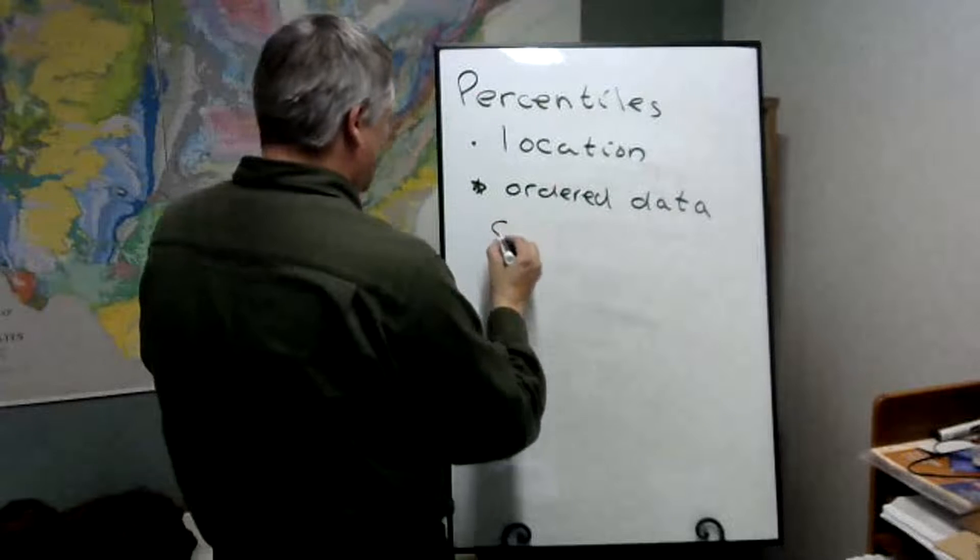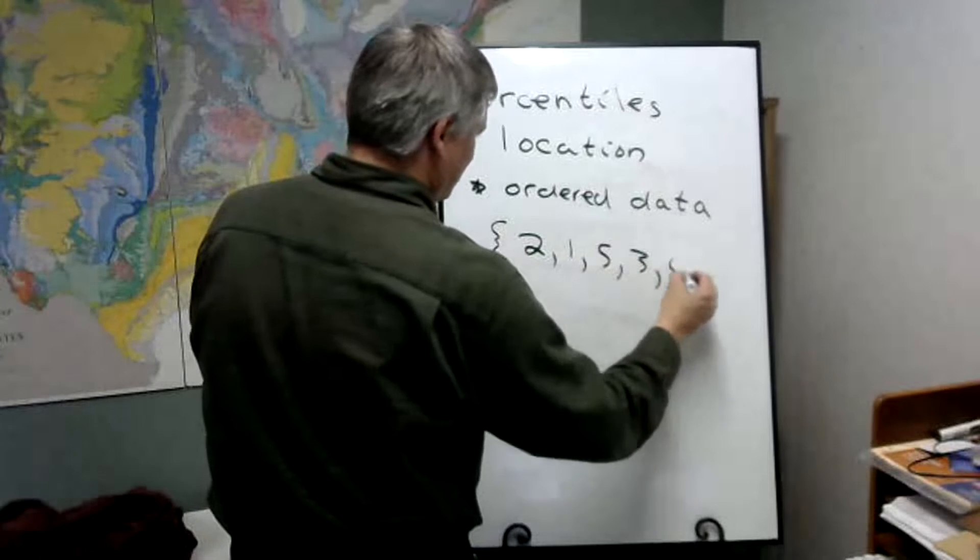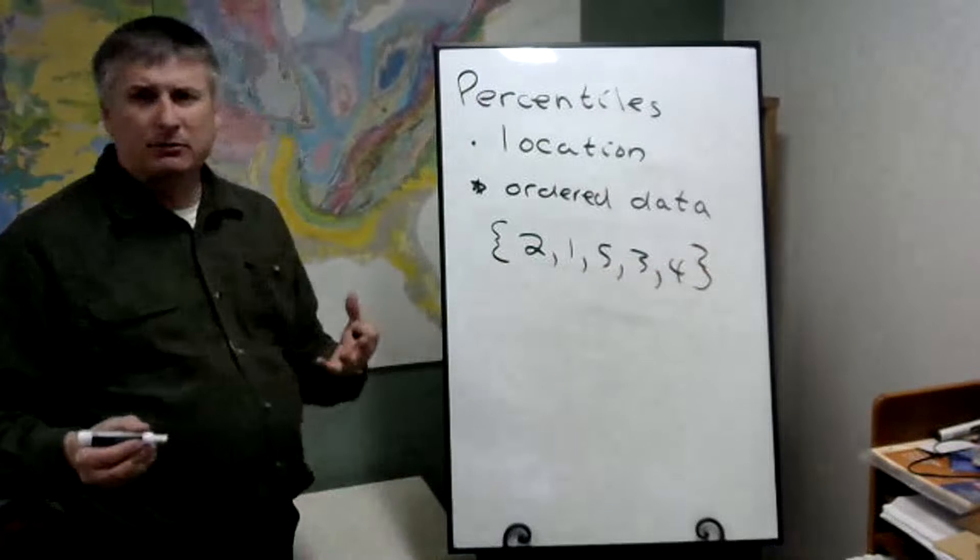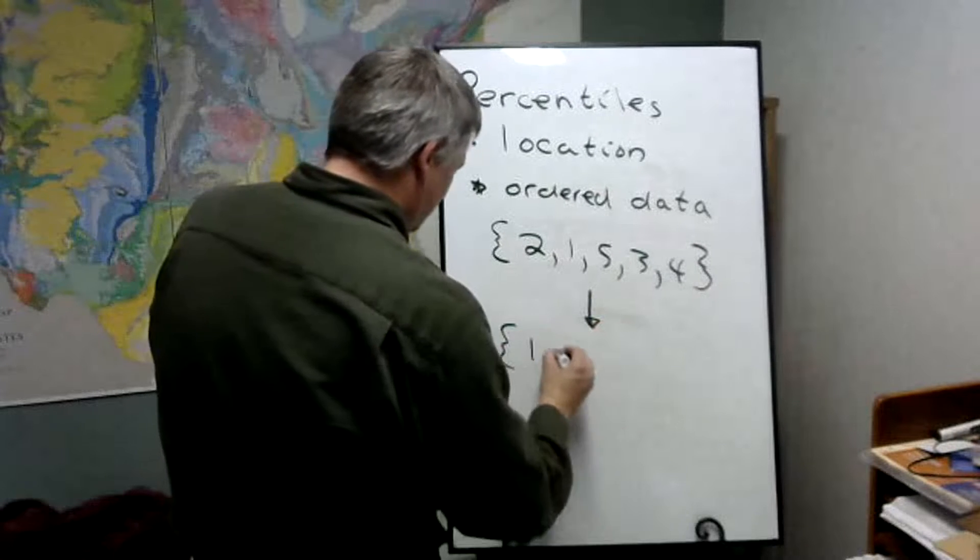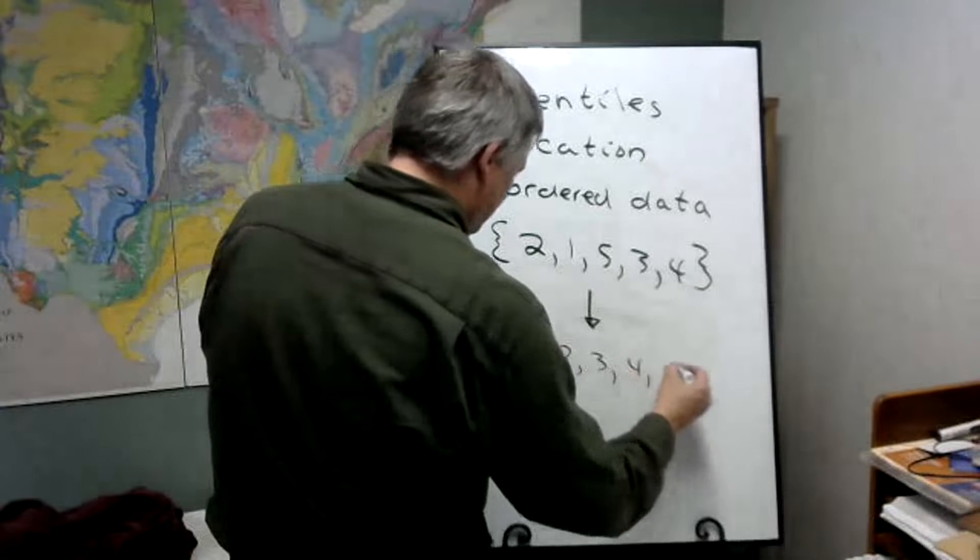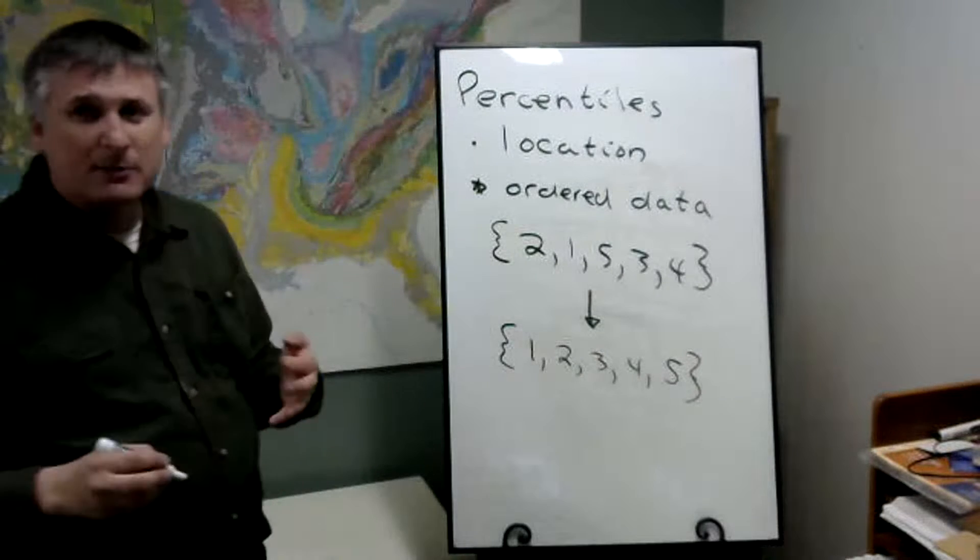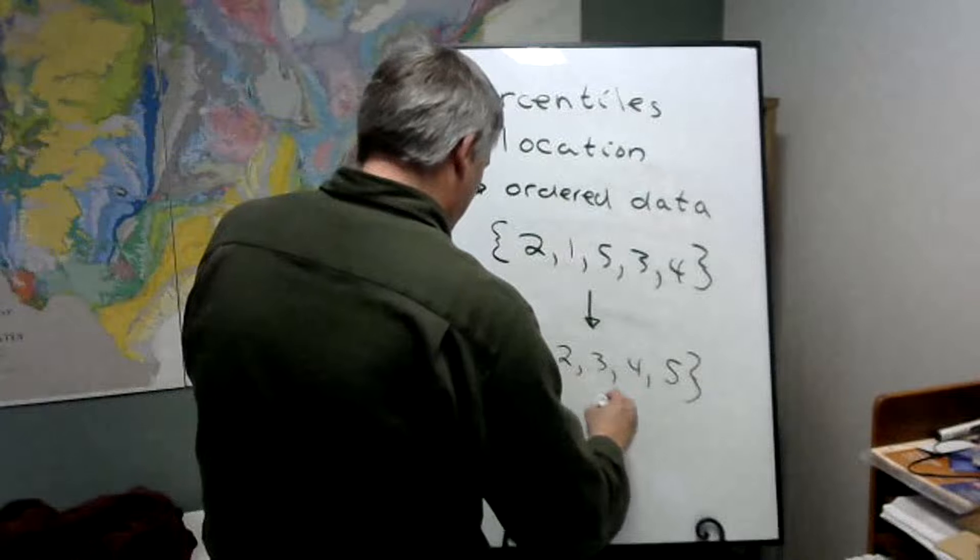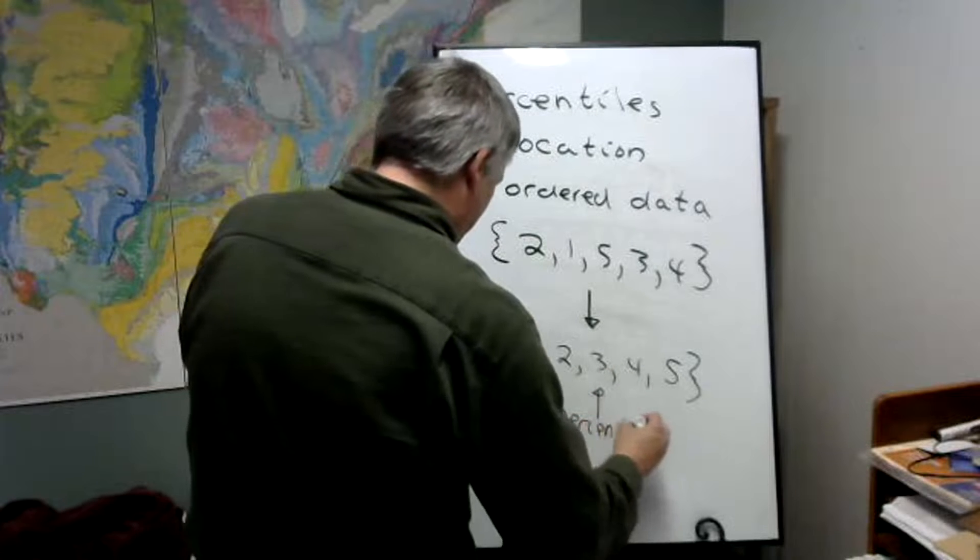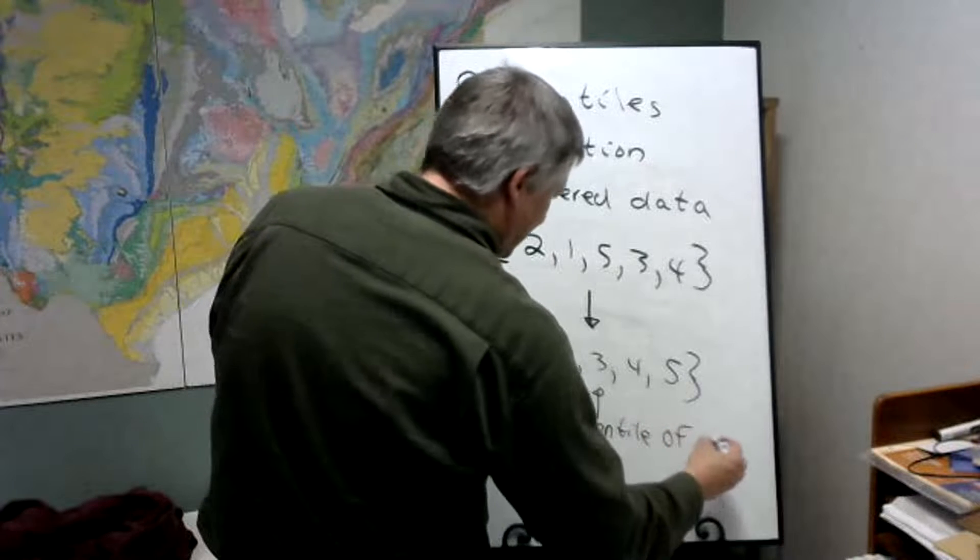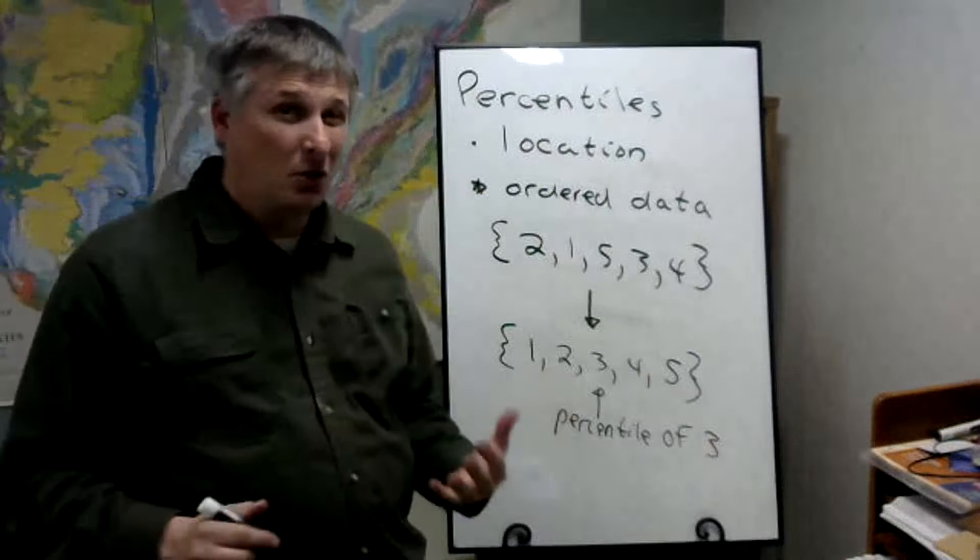We want to find out how much of our data is below a certain point. Let's say we take this as our data. We got to put it in order first. Let's say we ask this question: we want to find the percentile of three. In other words, how much of our data is below three?